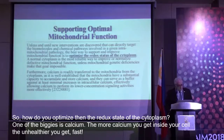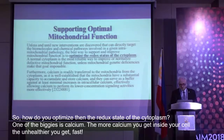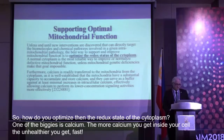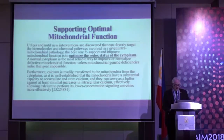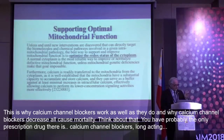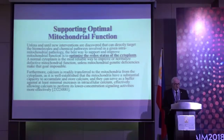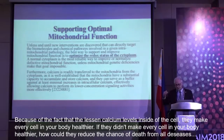How do you optimize the redox state of the cytoplasm? One of the biggies is calcium. The more calcium you get inside your cell, the unhealthier you get — fast. This is why calcium channel blockers work as well as they do and why calcium channel blockers decrease all-cause mortality. They lessen calcium levels inside the cell.